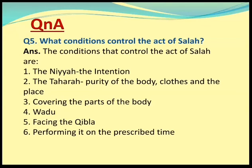And now, question and answers. Question number 5: What conditions control the act of Salah? Answer: The conditions that control the act of Salah are: Number 1, the Niyah — the intention; Number 2, the Taharah — purity of the body, clothes, and the place; Number 3, covering the parts of the body; Number 4, Wadu; Number 5, facing the Qibla; and Number 6, performing it at the prescribed time.